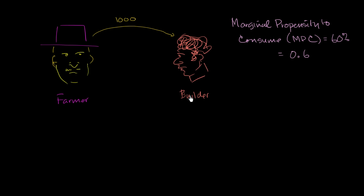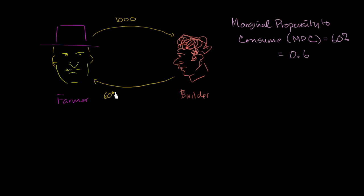Now the builder says, 'I've just gotten $1,000. I have a marginal propensity to consume of 60% or 0.6. I'm going to spend 60% of that.' And the only person he can spend it with is the farmer. He's going to spend 60% times $1,000, which is equal to $600.